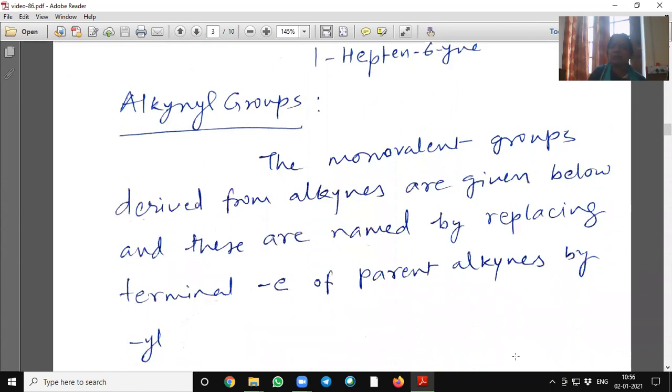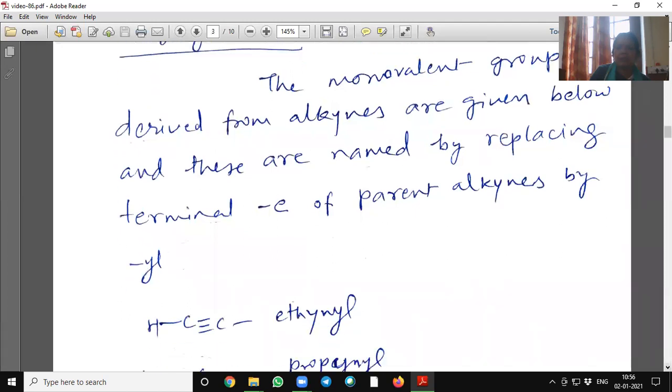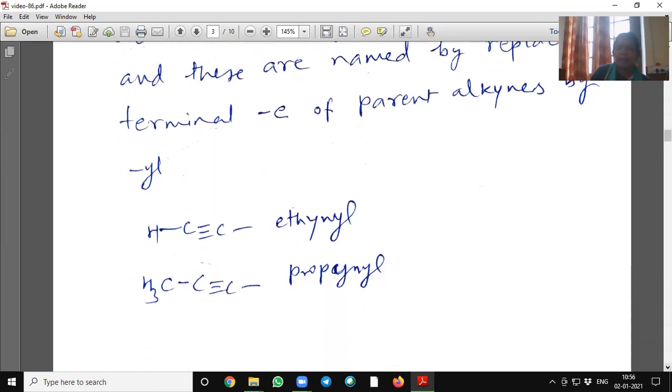Alkynyl groups. The monovalent groups derived from alkynes are given below. And these are named by replacing terminal 'e' of parent alkyne by 'yl'. This is ethynyl, propynyl, like that.